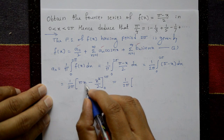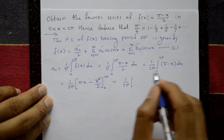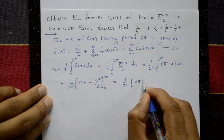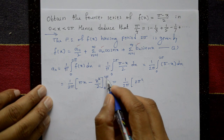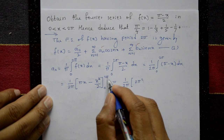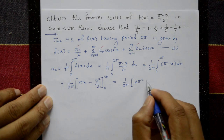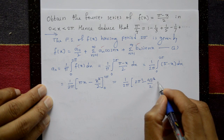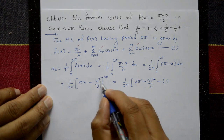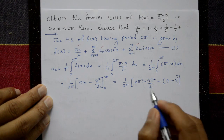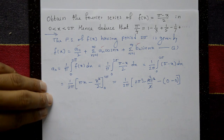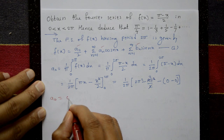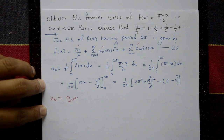Apply upper limit x = 2π: π(2π) - (2π)²/2 = 2π² - 4π²/2 = 2π² - 2π². Then subtract lower limit (x = 0): all terms are 0. So a₀ = (1/2π)(2π² - 2π²) = 0. The value of a₀ is 0.